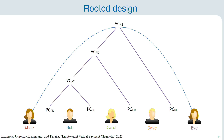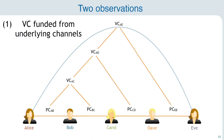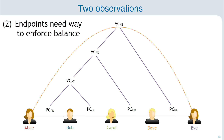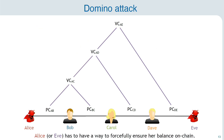I want to outline two things we can notice here. First, this design means that the virtual channel is funded from each of the underlying payment channels — in other words, the inputs for this virtual channel come directly or indirectly from all of the underlying payment channels. Second, the endpoints don't have control over all of these inputs that are necessary to put the virtual channel on-chain if necessary, which means we need some mechanism that allows the endpoints to enforce this balance or to put this virtual channel on-chain in case of a dispute. These two observations essentially lead to the new attack that we name the domino attack.